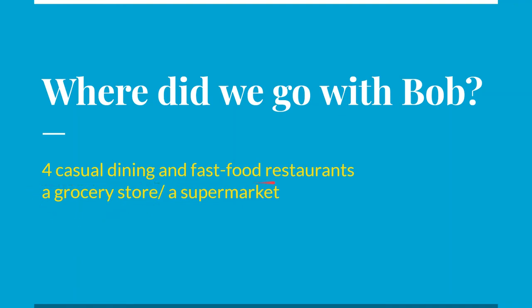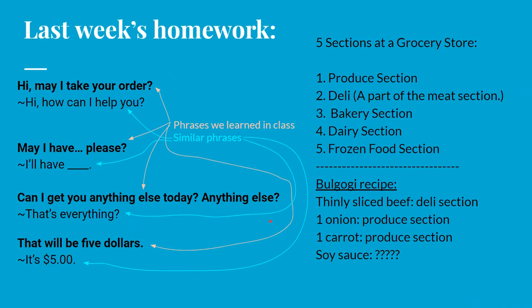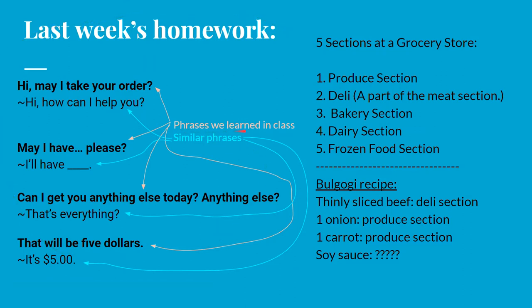In the two videos, where did we go with Bob? We went to four casual dining and fast food restaurants, and we also went to a grocery store and supermarket. Let's quickly review last week's homework. In video one, I had you write down phrases we learned in class to order food, and below those phrases I wanted you to write down similar phrases.